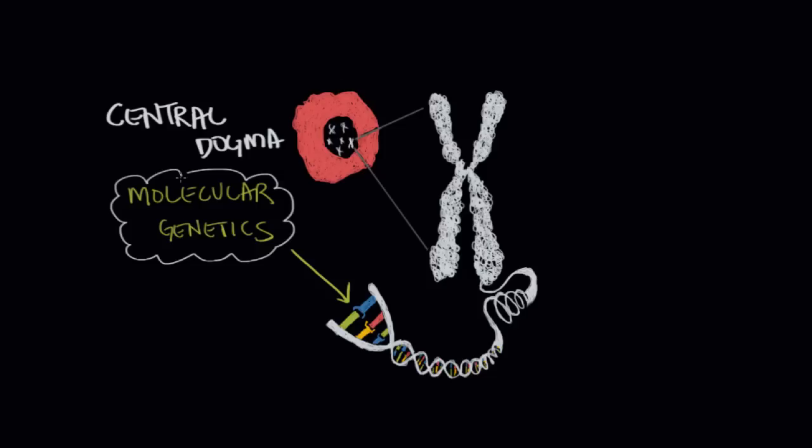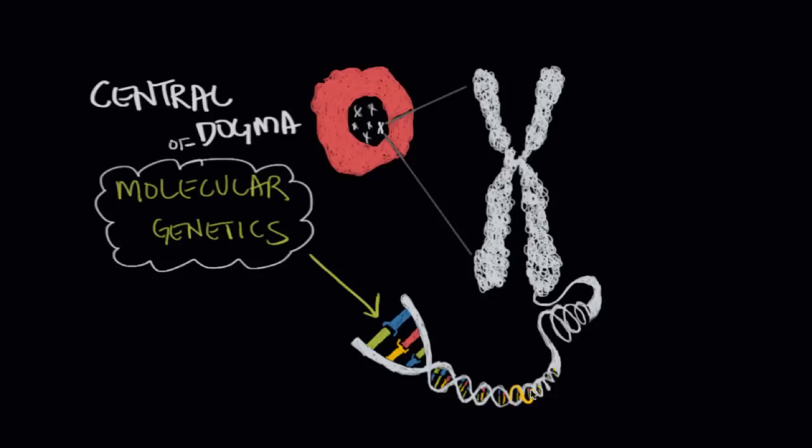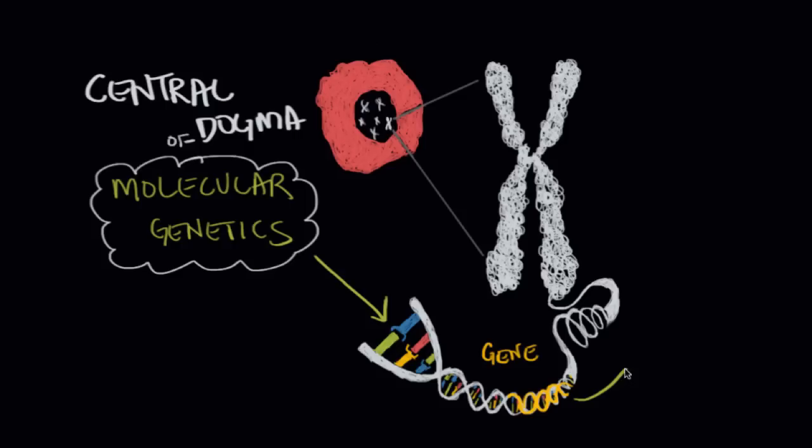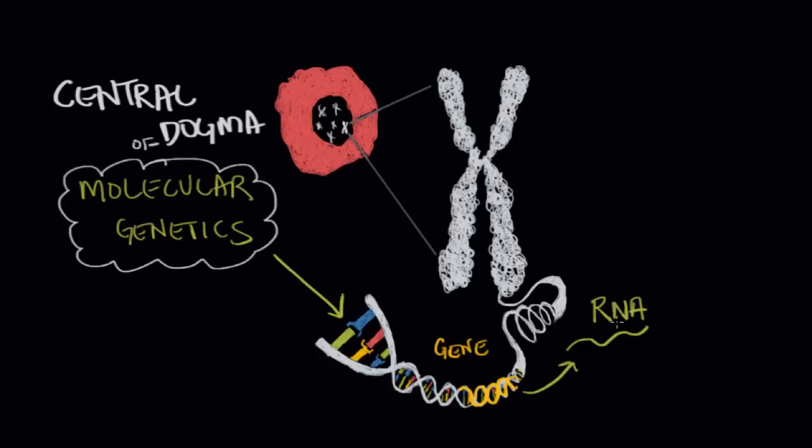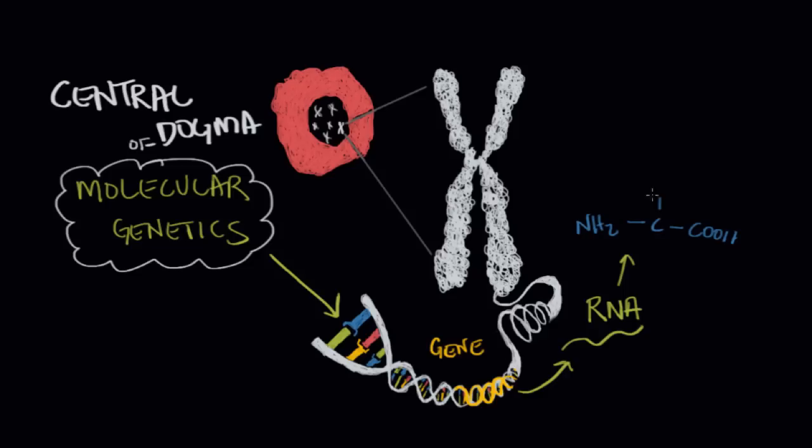And the central dogma of molecular genetics essentially just says that segments of DNA called genes, so a segment of DNA called a gene codes for RNA or ribonucleic acid. And the little units of RNA called codons are going to code for one of the 20 amino acids. And at this point it's becoming a little bit more of a biology concept, but these amino acids that are being coded for eventually become the building block of proteins.